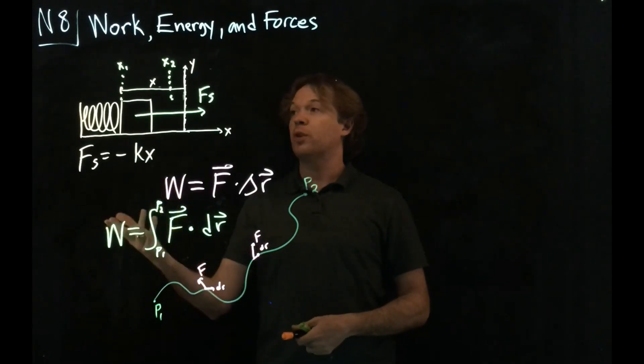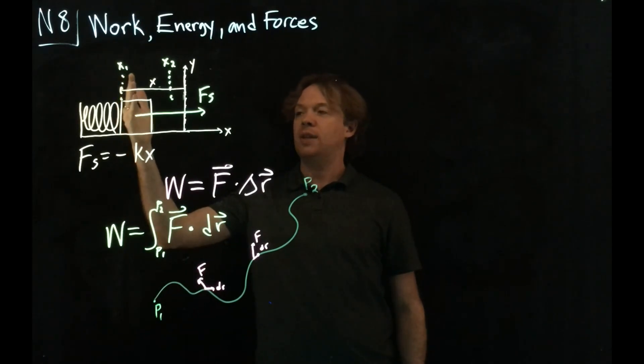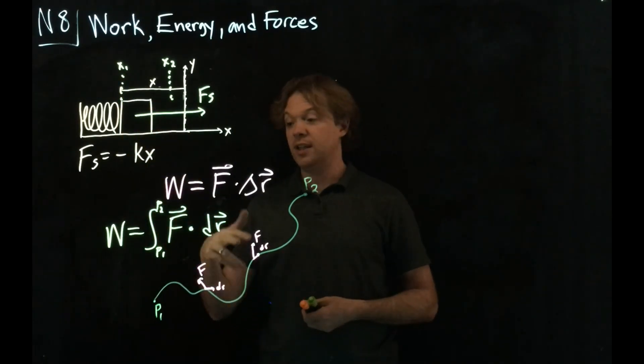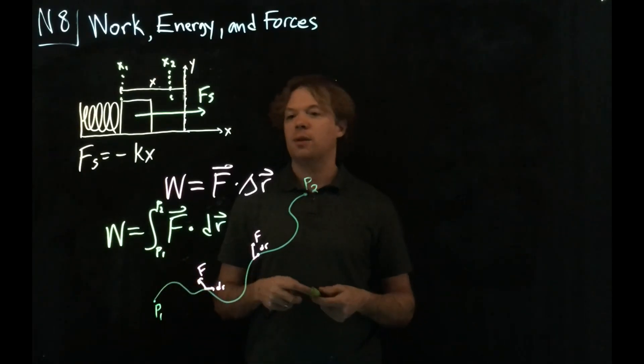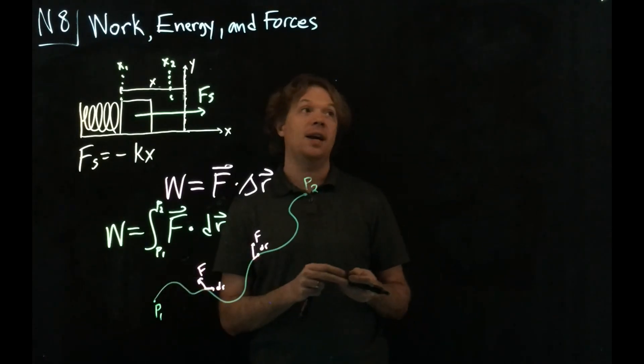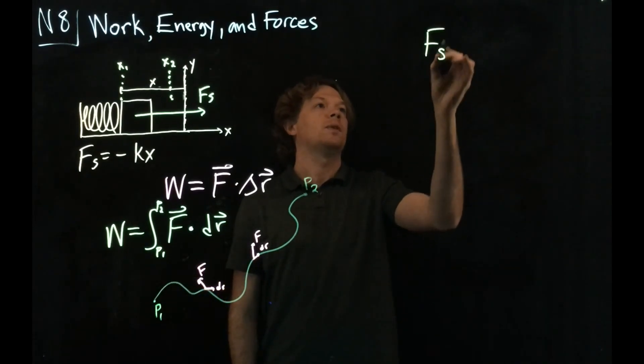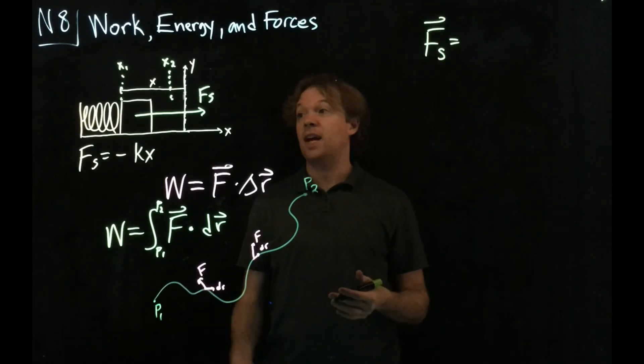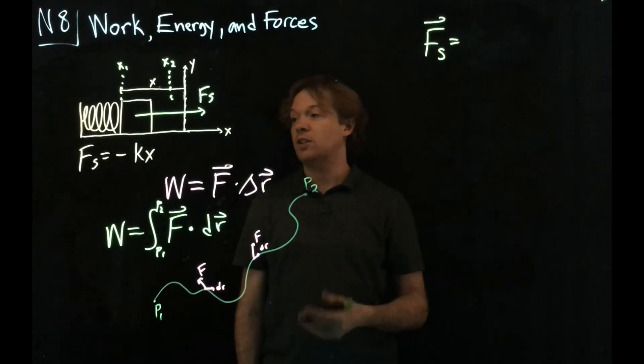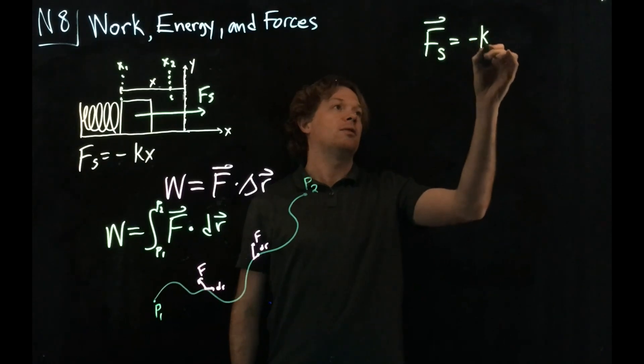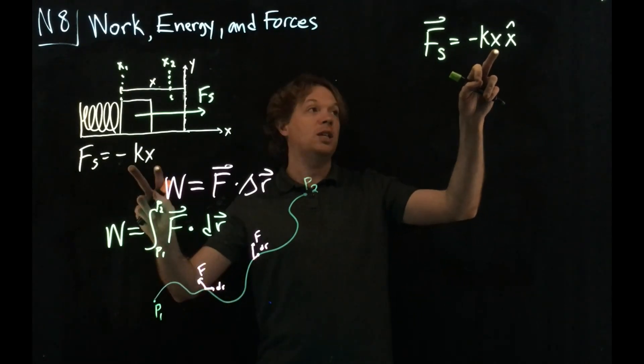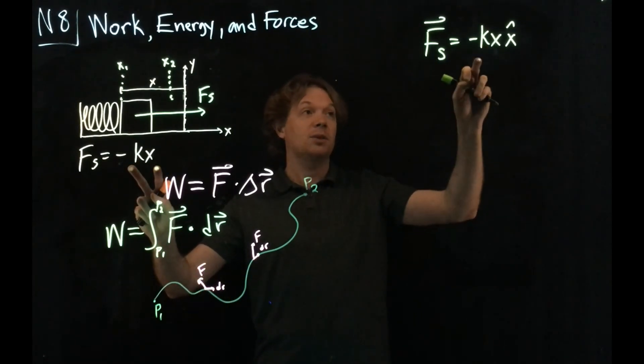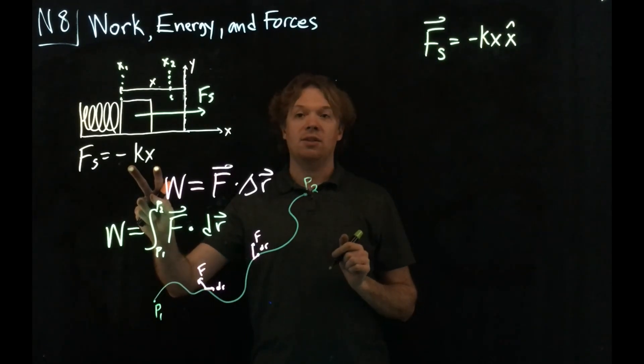If I want to calculate the amount of work that the spring does as it takes the block from x1 to x2, I'm obviously going to have to do this integral, which means I'm going to have to do this dot product. I want to write the spring force as a vector. The spring force as a vector has zero in the y direction, so there's no vector component in the y direction, but there is a vector component in the x direction, and it's minus kx. That's in the x direction, x hat. This tells me the same thing—when x is negative, this entire thing is positive, Fs is in the positive x hat direction.